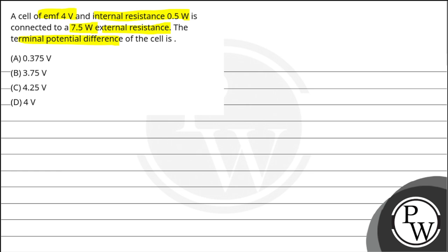Option B: 3.75 volts, Option C: 4.25 volts, Option D: 4 volts. So we have a key concept in current electricity. Here we have a cell with emf 4 volts.